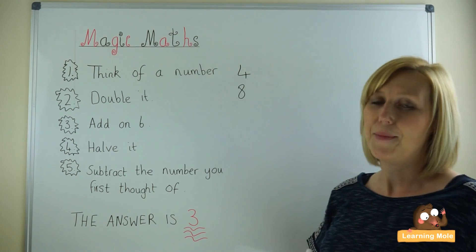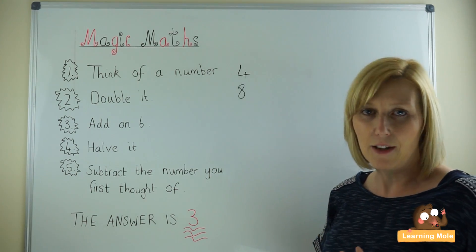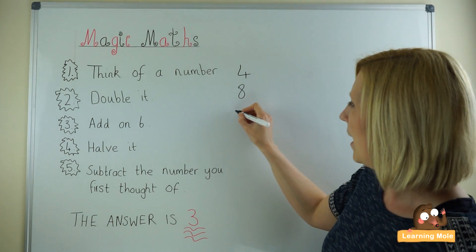We now want to add on 6. So you're going to encourage your child to think about you're at 8. Now you need to add on 6. What strategy are you going to use? So hopefully they will get to 14.